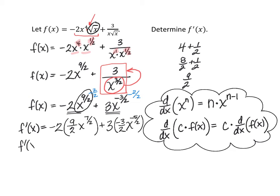Simplifying, we can divide out the 2s: f'(x) = -9x^(7/2) - (9/2)x^(-5/2). This is a perfectly acceptable answer. This looks great.